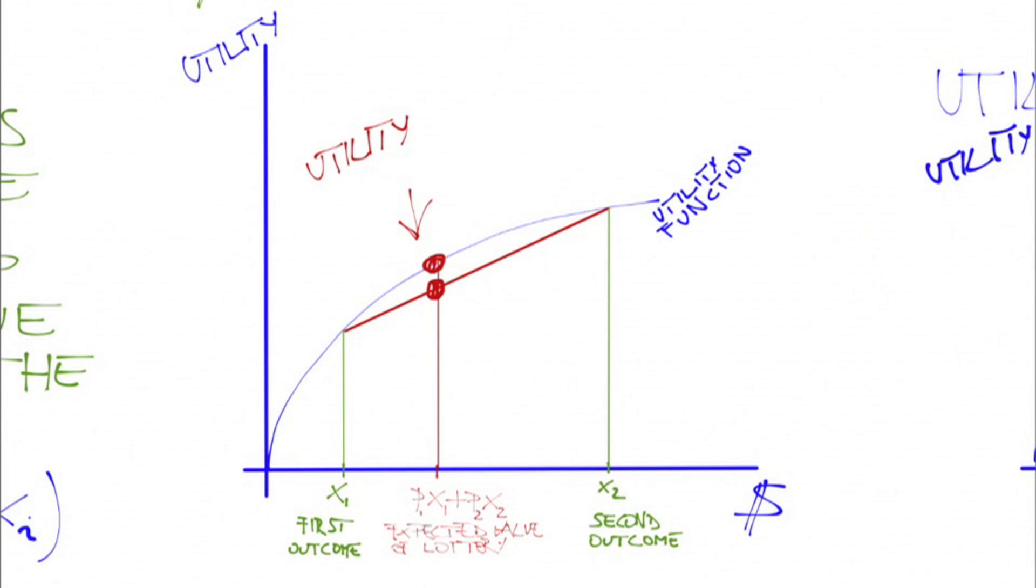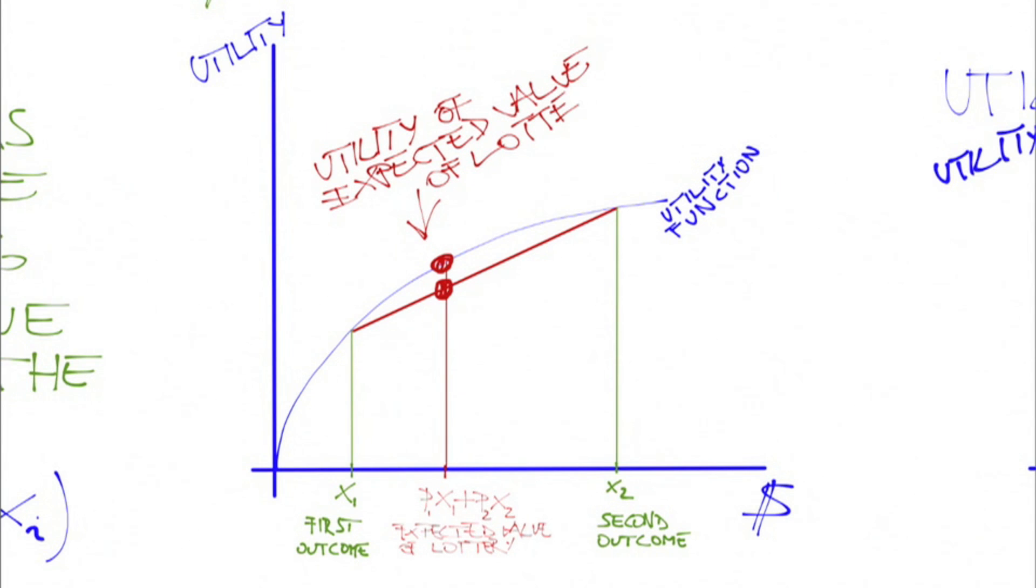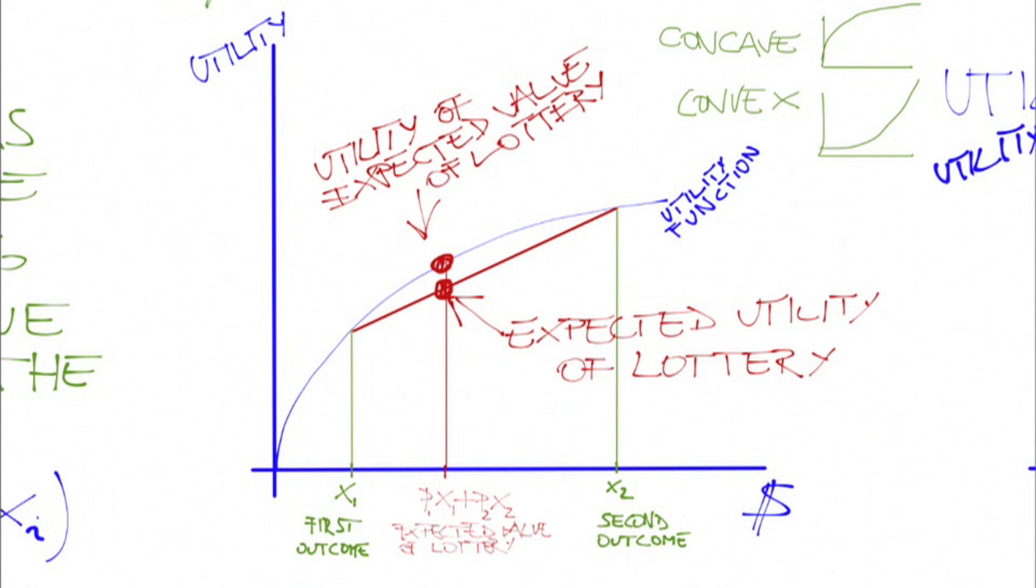Risk aversion means that the utility of the expected value is higher than the expected utility. This happens exactly when the Bernoulli utility function is concave. If the Bernoulli utility function is convex, then the decision maker is risk-loving. If it is linear, then the decision maker is risk-neutral.